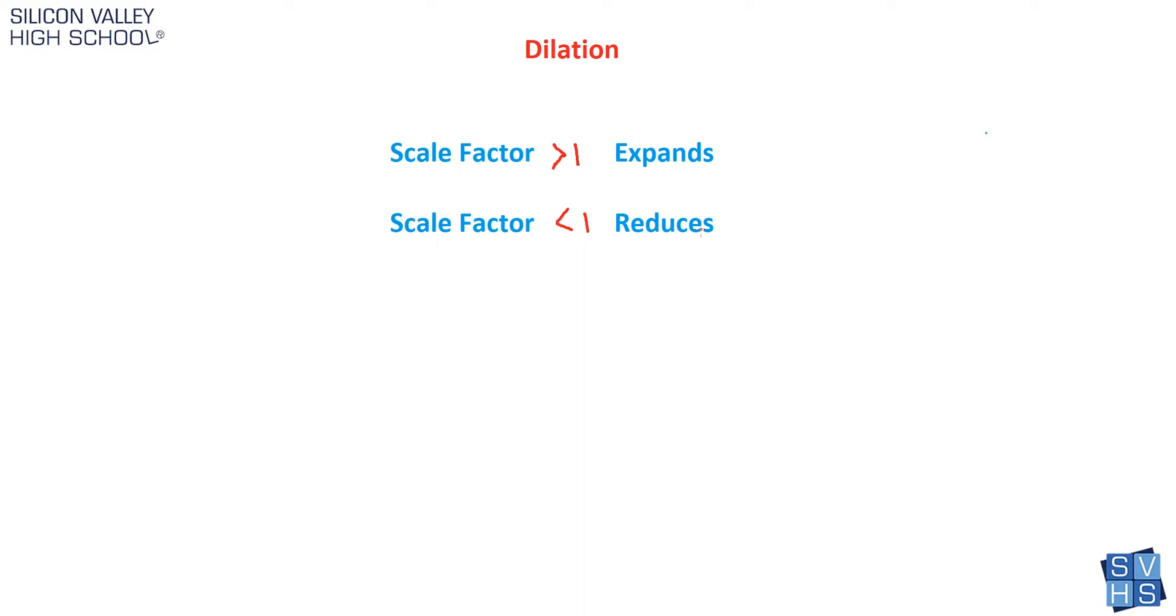So what if I said dilate something by a scale factor of 2? You'd say, okay, well, that's easy. Obviously, I know that's bigger than 1, so it grows. Let's say I dilate something by a scale factor of 1 third. And you would say, well, that's really easy. That's less than 1. 1 third is less than 1, so it reduces, so this would get smaller. It would shrink.